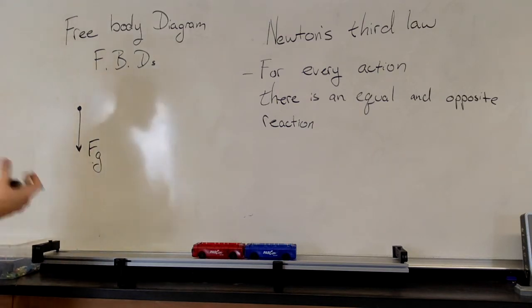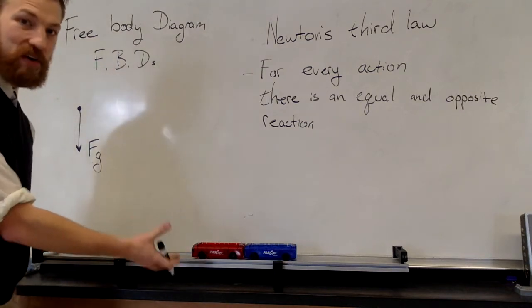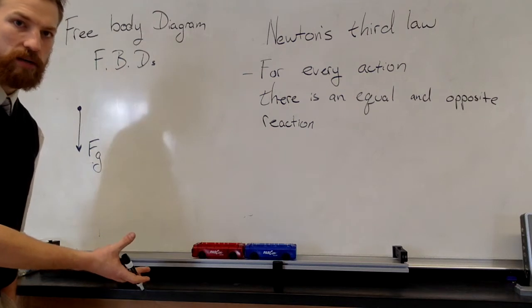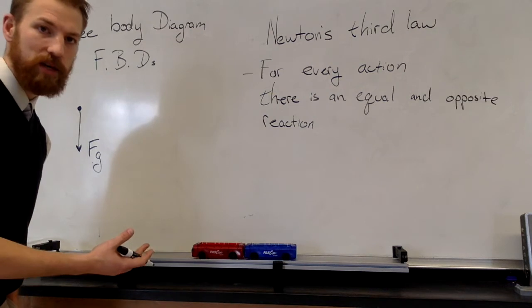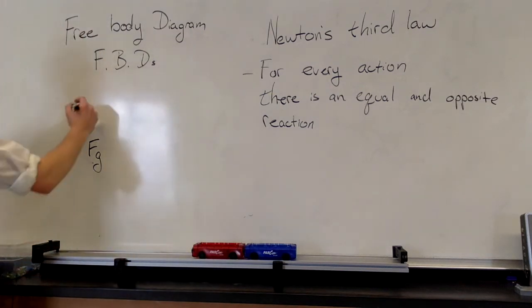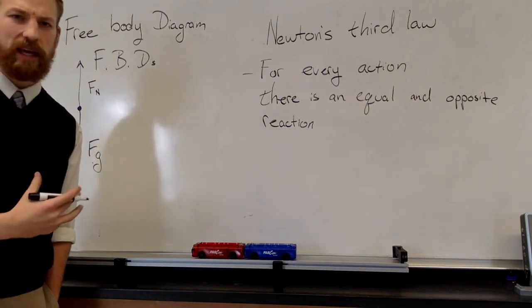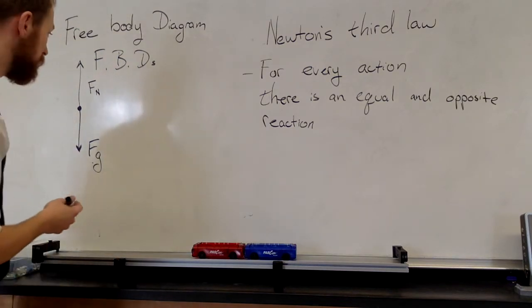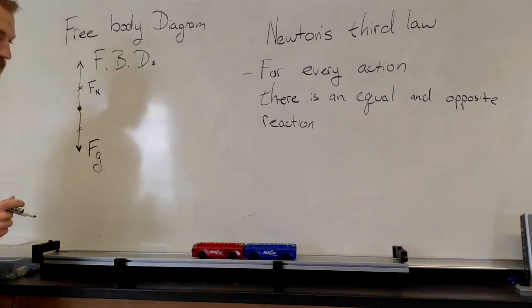But Newton's second law says if there's one force acting on this object, it should be accelerating. This object is very clearly not accelerating. So we must have a second force acting on this object to cancel this force out. We call that force the force from this surface. A force from a surface is called a normal force. And we'll talk about normal forces a little bit later, maybe in the next video. But for right now, know that these two forces are the same, and they cancel each other out.